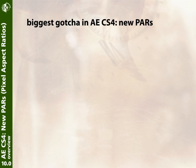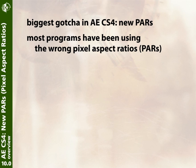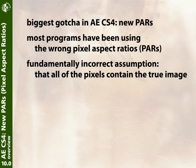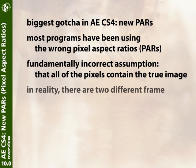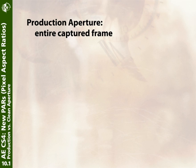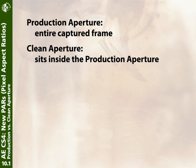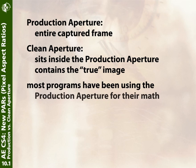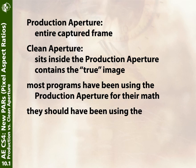The biggest gotcha in CS4 is the change in pixel aspect ratios for a variety of video formats. For all of these years, most video applications — After Effects included — have been using a slightly wrong number for pixel aspect ratios. They assumed the entire frame is supposed to be visible image and based their math off of that. In reality, there are two different sizes: the production aperture, which is the entire image area of the captured file, and the clean aperture, a slightly smaller area that has the true aspect ratio of the final image. Programs like After Effects have been looking at the production aperture to decide PAR when they should have been looking at the clean aperture.